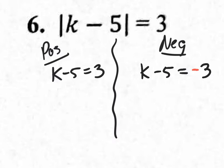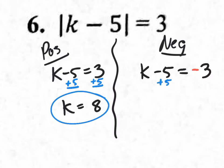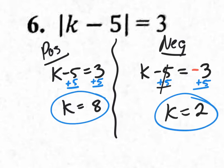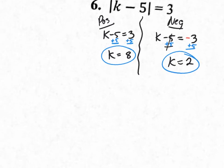For the negative situation, it's the same thing — k minus 5 equals — but you change the sign of the right side to negative 3. That's how you set it up. For the positive situation, add 5 to both sides: k equals 8. For the negative situation, add 5 to both sides with negative 3: k equals 2. To verify, plug k=8 back in: |8−5|=|3|=3 ✓. Plug in k=2: |2−5|=|−3|=3 ✓.